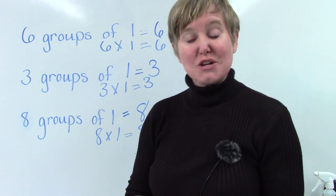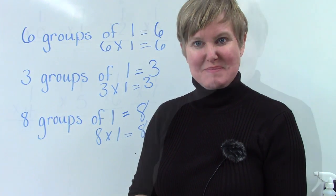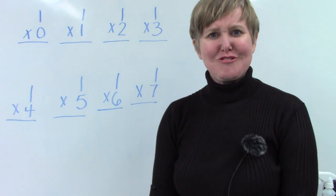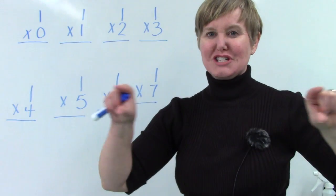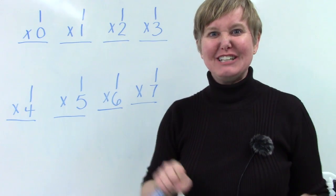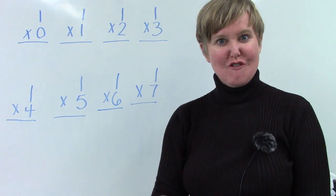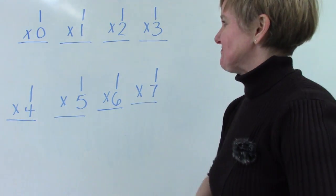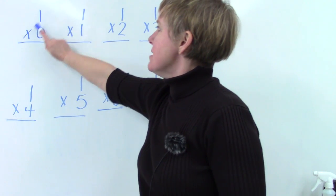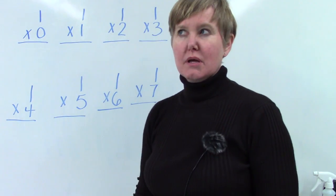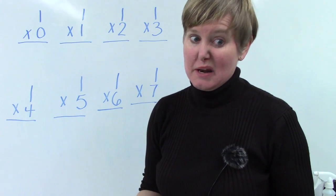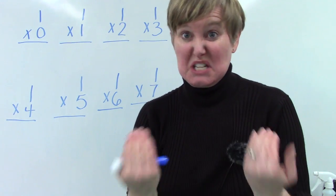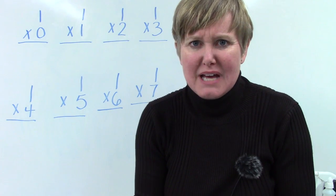Let's look at this written another way. We have been writing our problems horizontally. And now I would like for us to look at writing them vertically. On this question, we say that we have one group of zero. I want you to think about that one. If we have a group of zero, how many do we have?